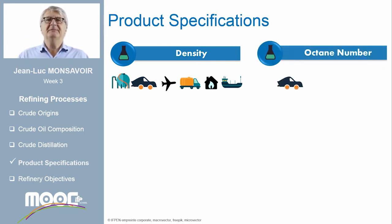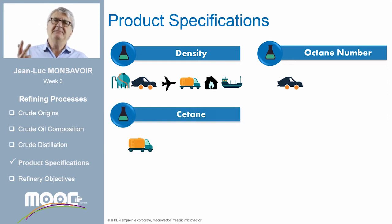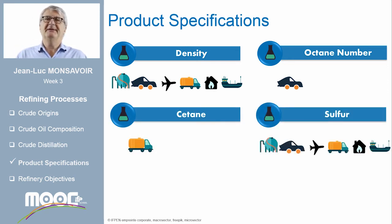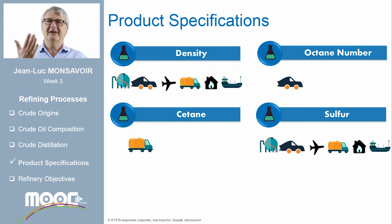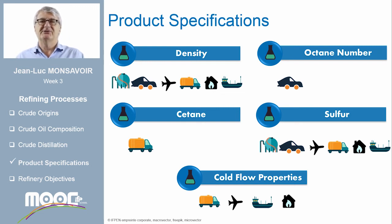The octane number is used to specify the gasoline for spark ignition engines. Cetane is a specification for diesel engines. Sulfur content is an important specification for environmental concerns for many products from a refinery. Finally, we will describe the cold flow properties of products — important to be able to start and run an engine in cold conditions, like in winter.